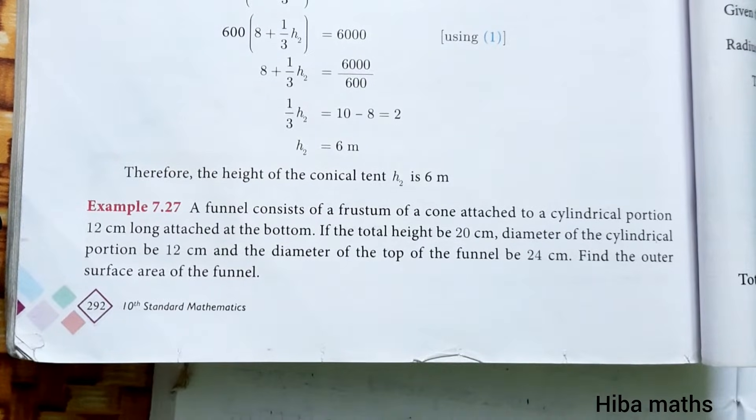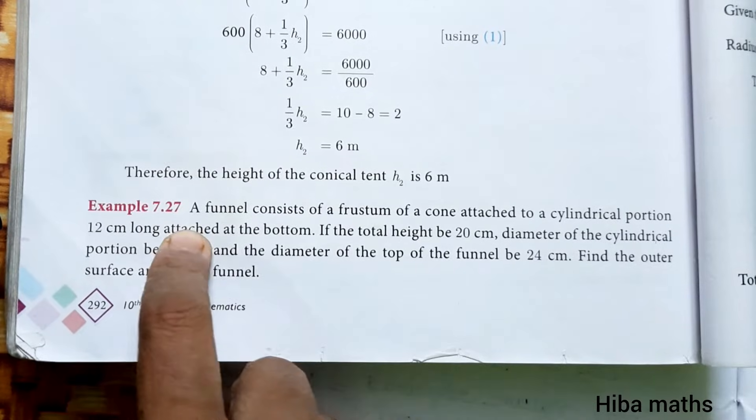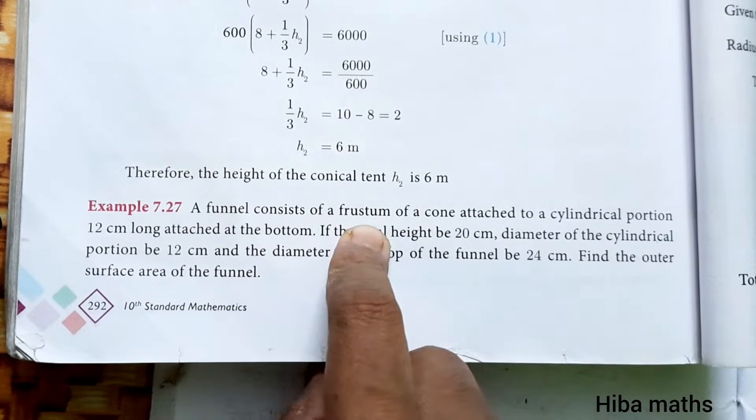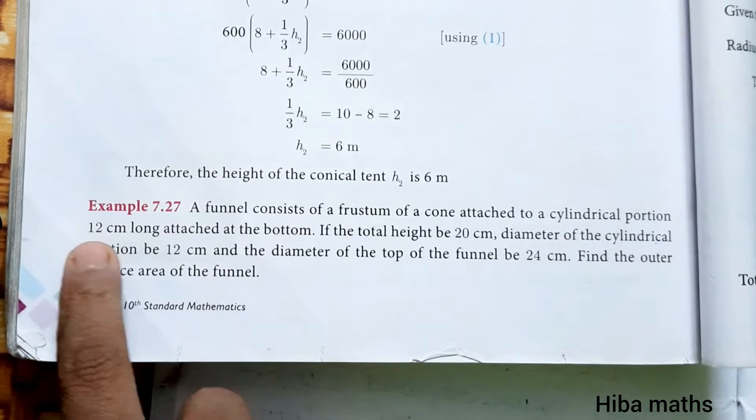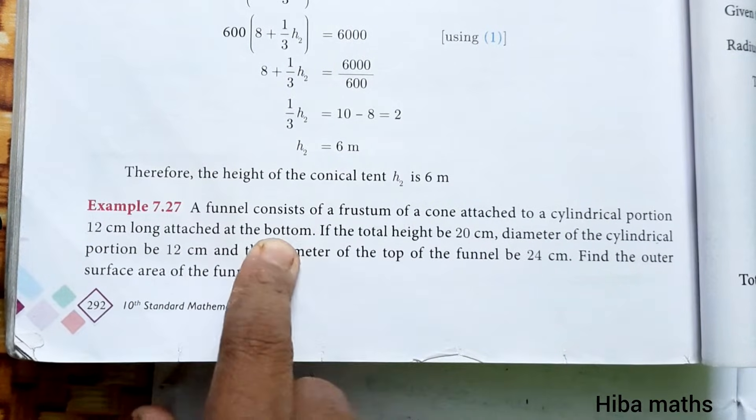Hello students, welcome to Hiba Maths, 10th Standard Maths, Chapter 7 Mensuration, Example 7.27. A funnel consists of a frustum of a cone attached to a cylindrical portion 12 cm long attached at the bottom.